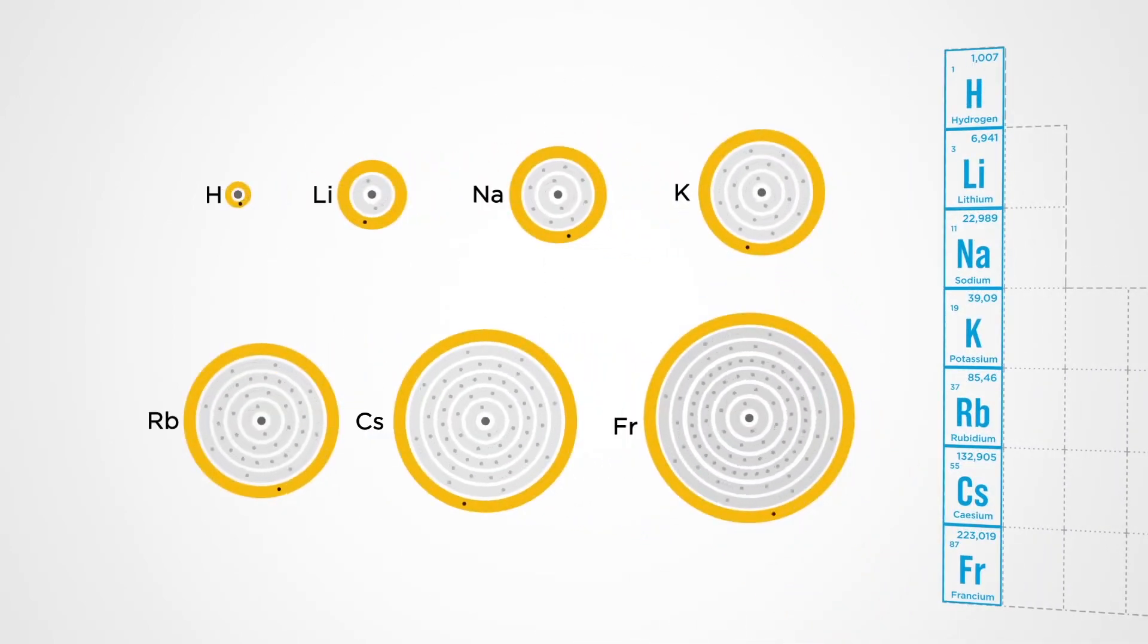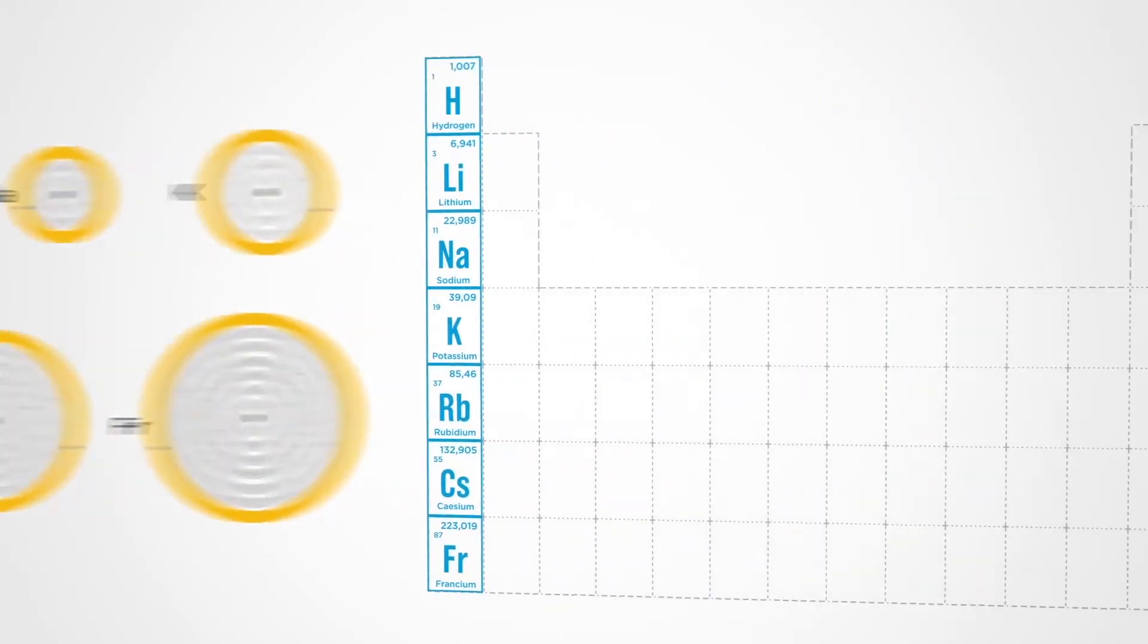In the first column of the table, we have the elements that have a single electron in the outer layer, and in the last column, we have those who have filled this layer.